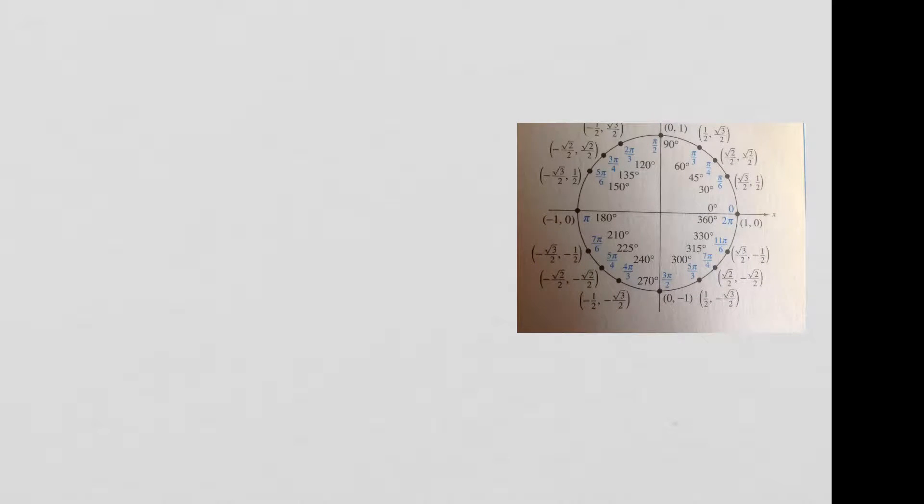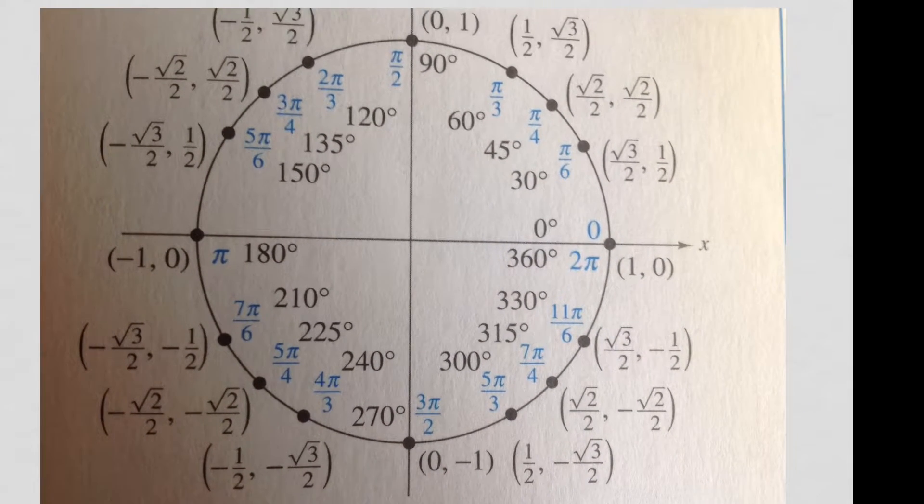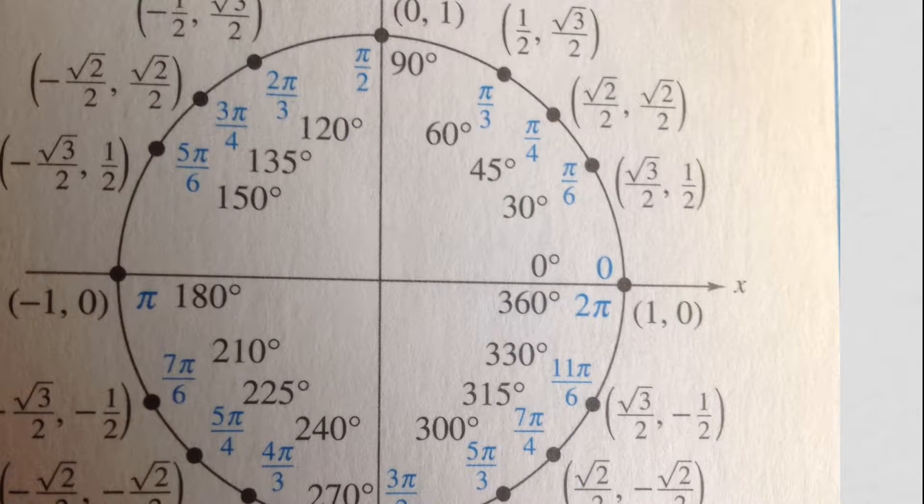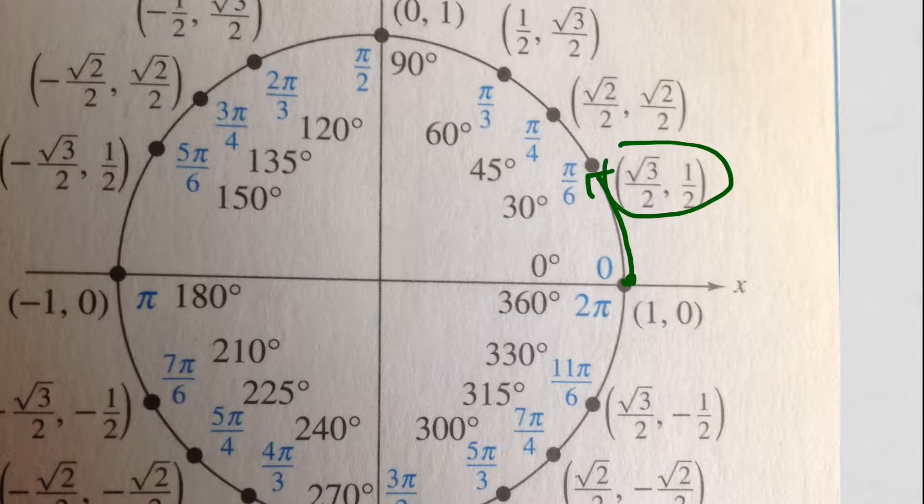So I took a picture of our unit circle here from the front of our book. Okay, here it is. Here is, remember, t value is just the distance from here. Here's positive pi over 6, it would be the square root of 3 over 2, 1 half. That would be with a positive pi over 6, all right?